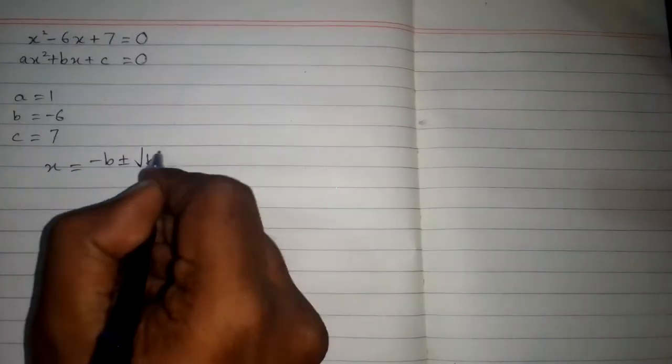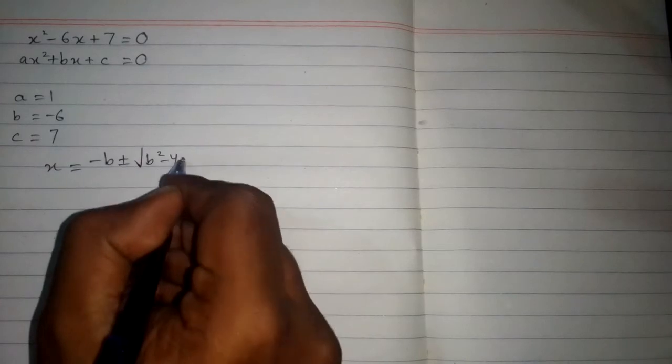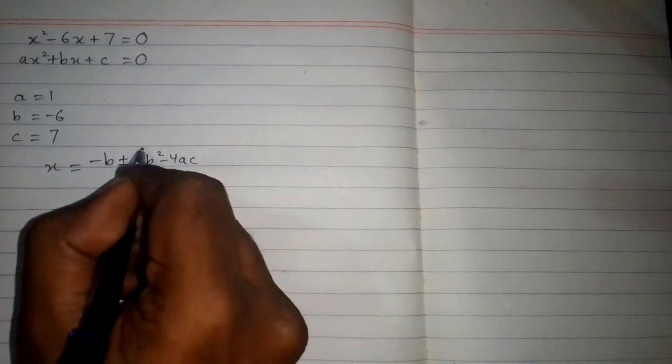Now we will use the quadratic formula, which is x is equal to minus b plus or minus the square root of b squared minus 4ac, all over 2a.